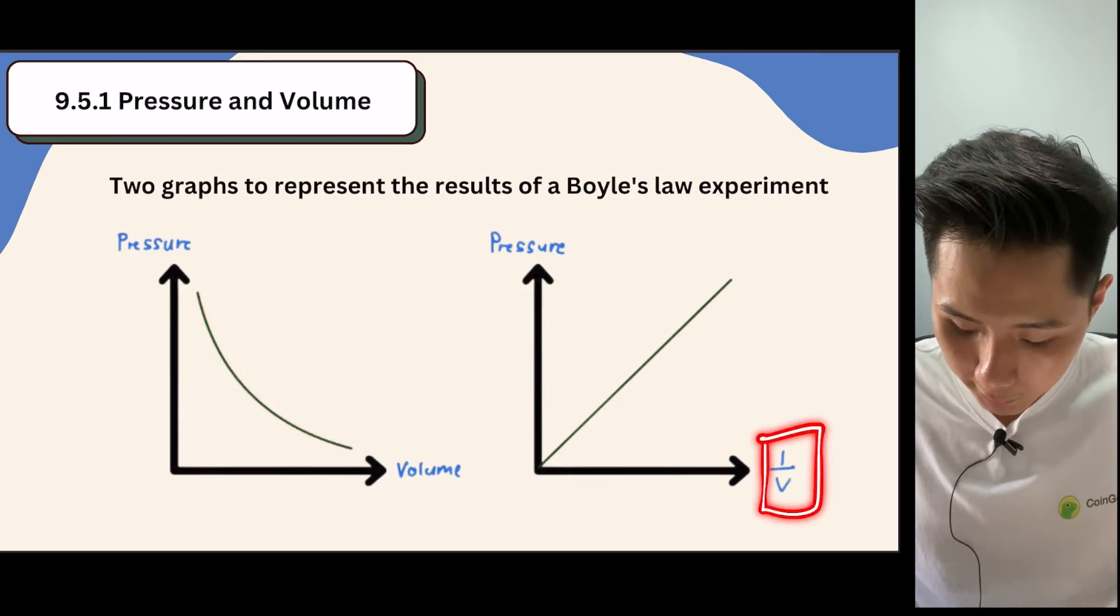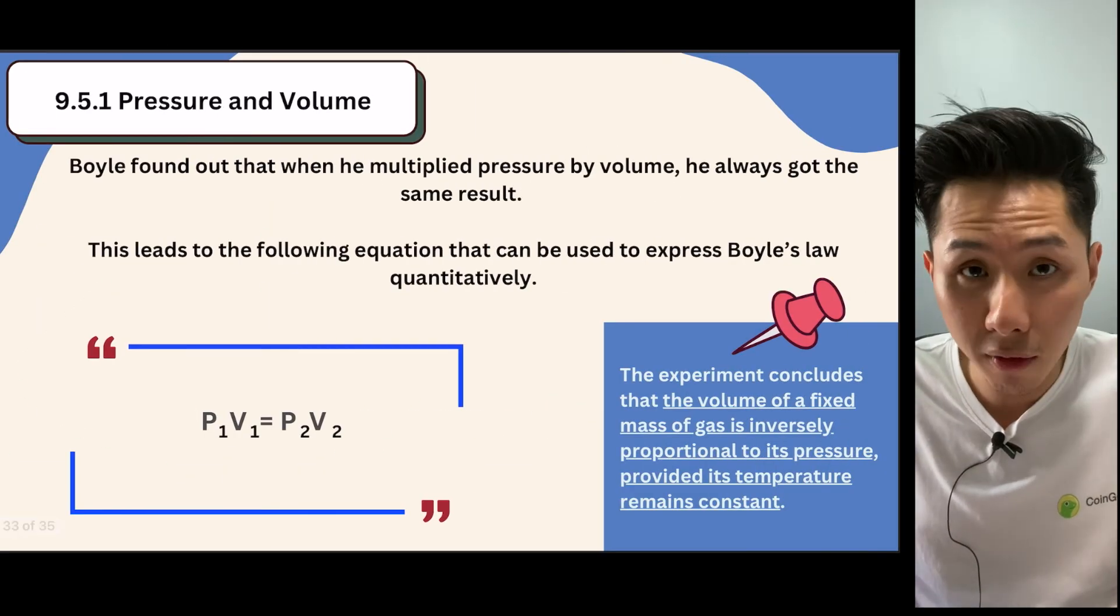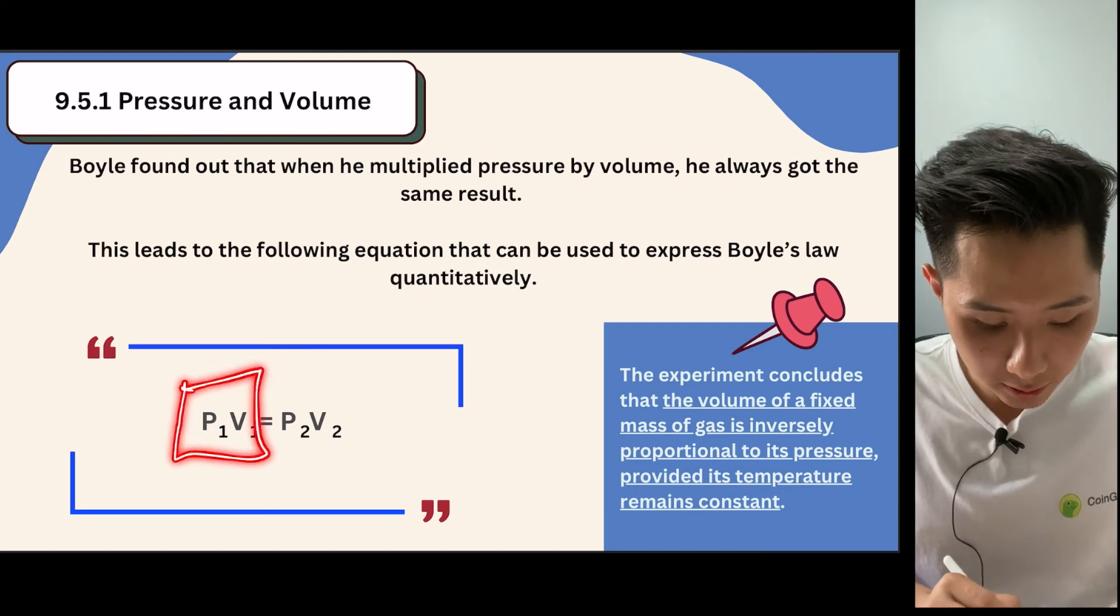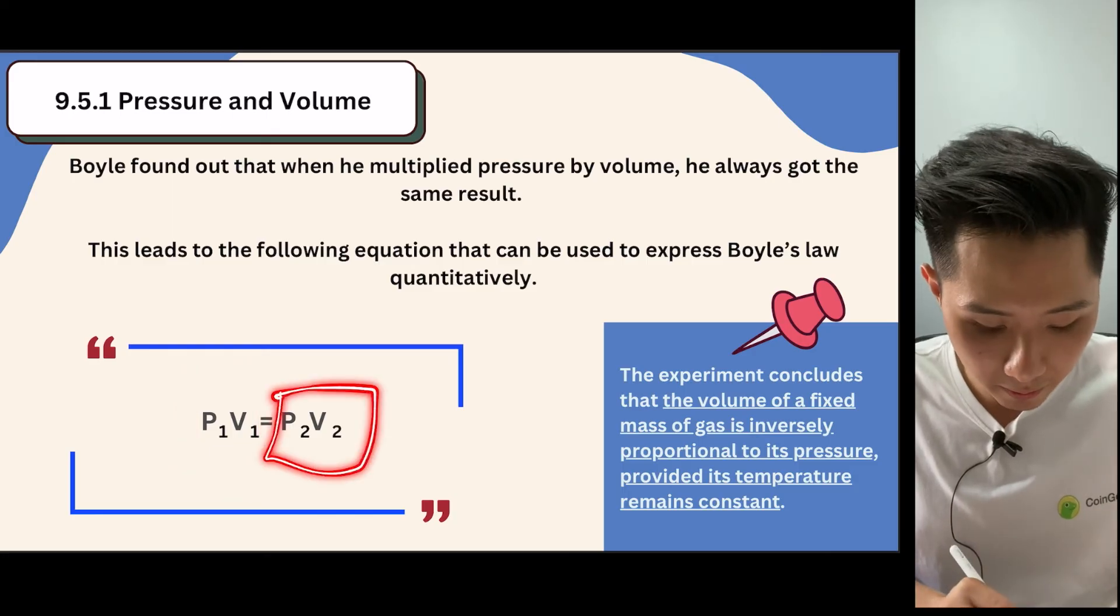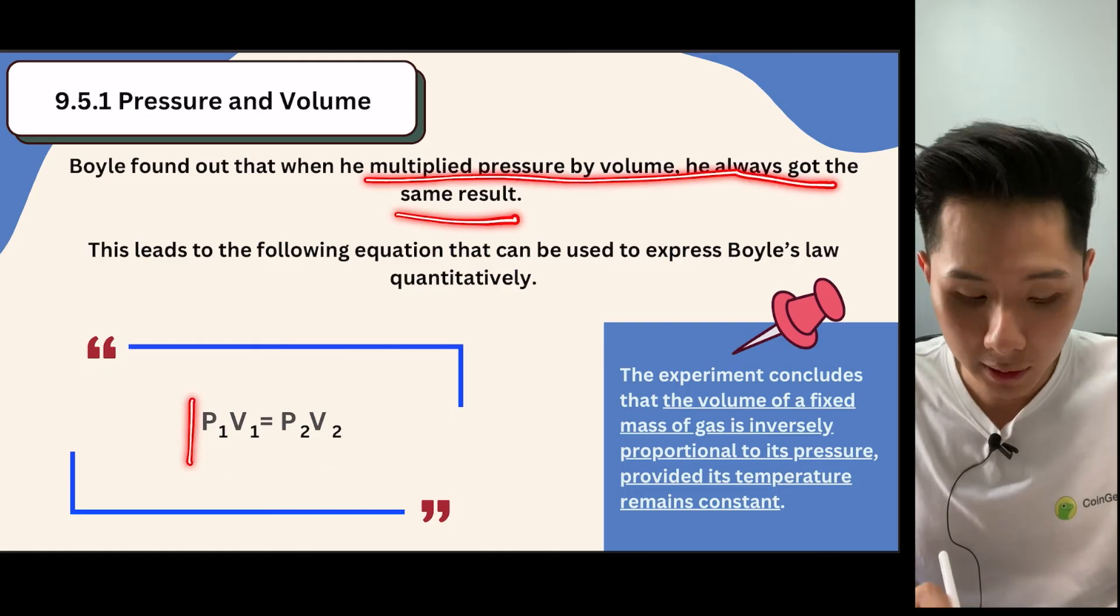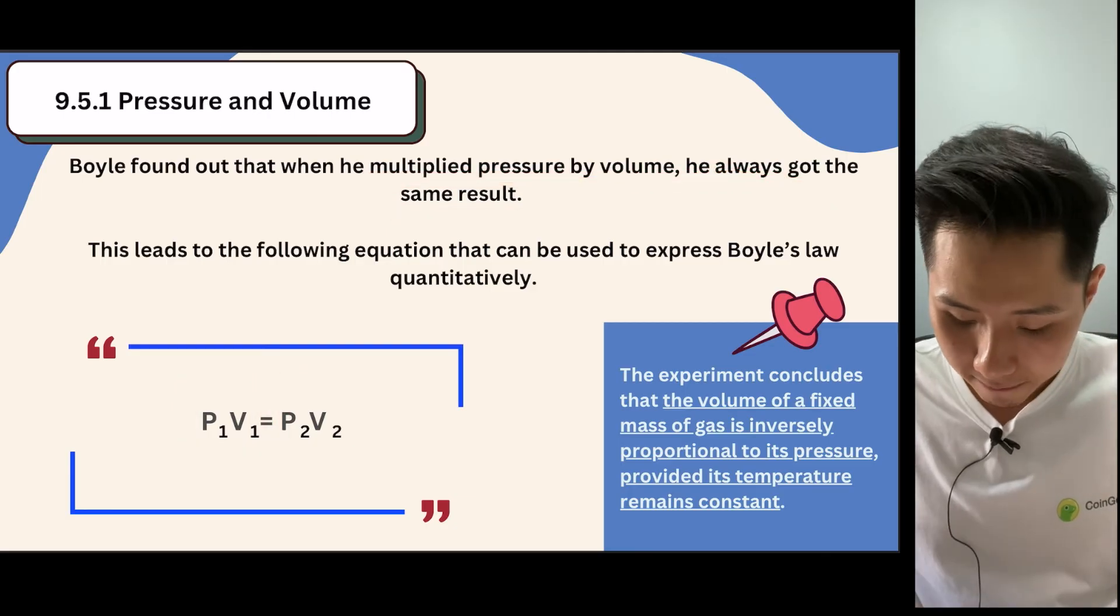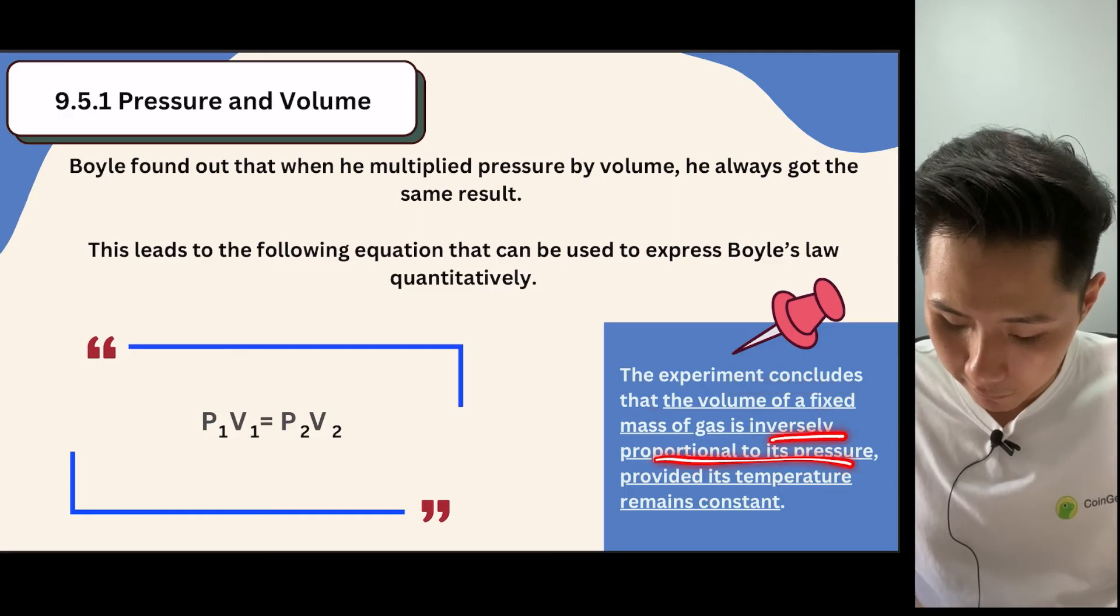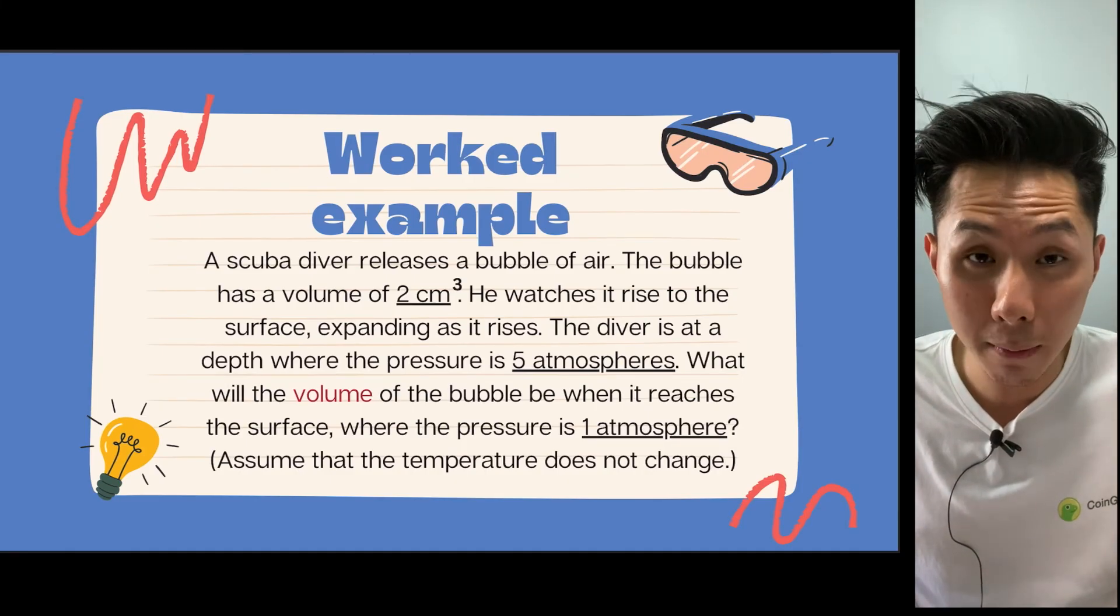And this is the formula that the experiments discovered. You can use the volume and pressure of one container, and then compare it with another container. So Boyle found out that when he multiplied pressure by volume, he always got the same result. This means that you can always make two quantities equal. And the experiments conclude that the volume of a fixed mass gas is inversely proportional to its pressure. So let's try to do this worked example to understand Boyle's Law.